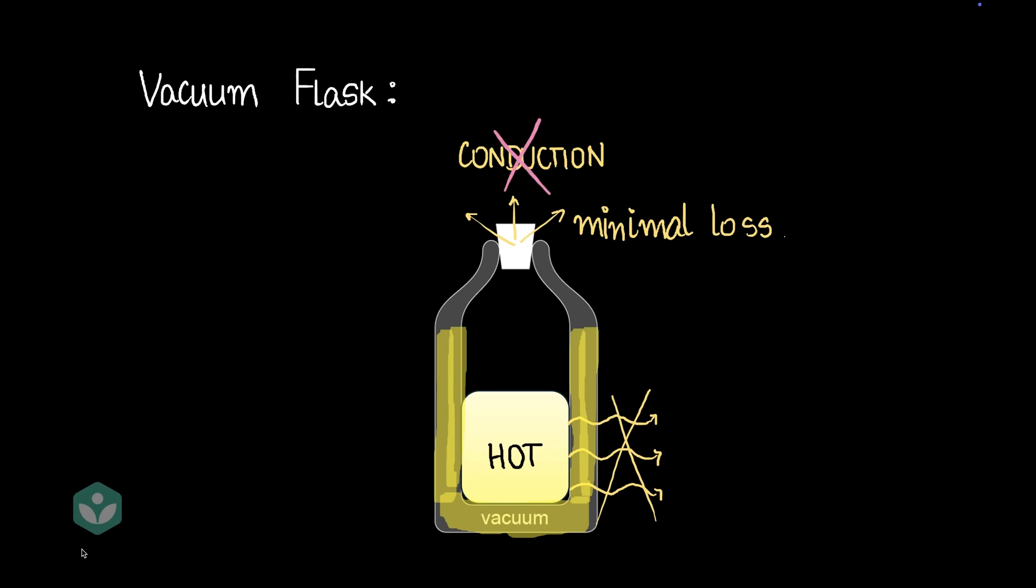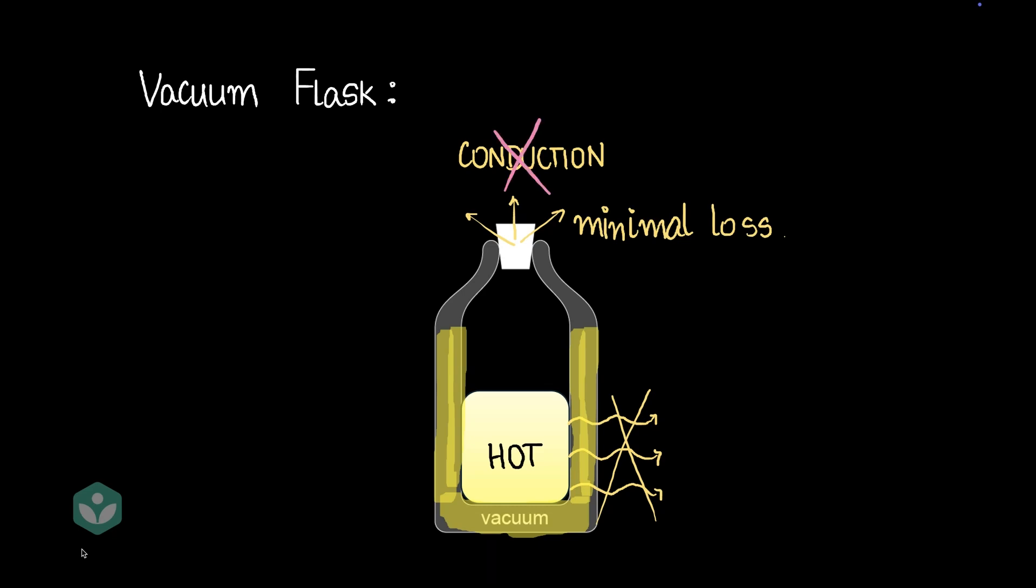So conduction is totally dealt with in the vacuum flask. What about convection? Hot air rises in the flask, but there's no room for it to escape because it's blocked, right? And so even convection doesn't work here.